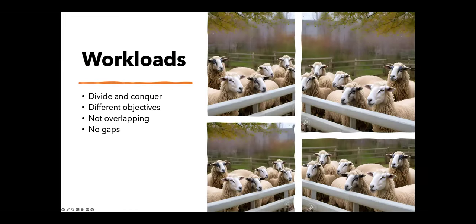One of the first things we have to do is divide our enterprise up into workloads. This is tricky — it may seem straightforward, but it is very tricky to do it fairly. You must divide and conquer all the efforts of the organization. Each one will have a different objective. There should not be any overlapping work across different workloads, and there should be no gaps either. Everything should be accounted for. A lot of times we leave things out that really are part of the project.